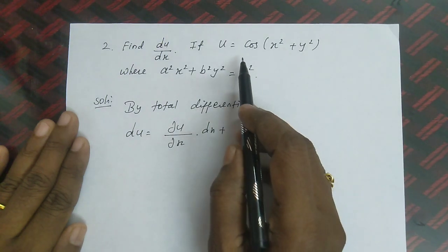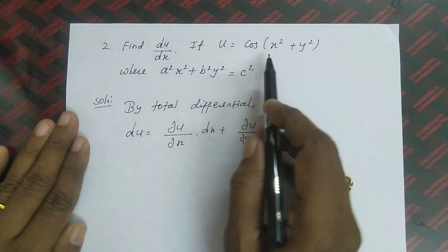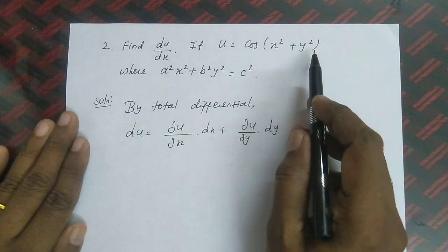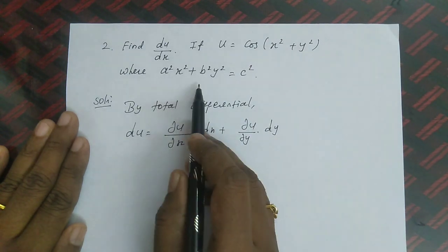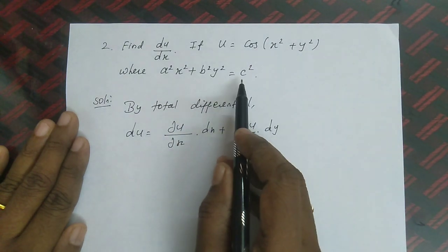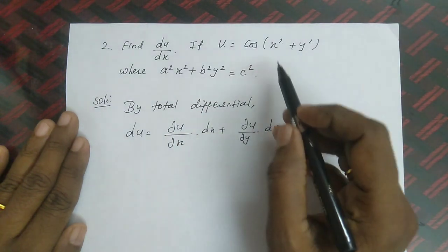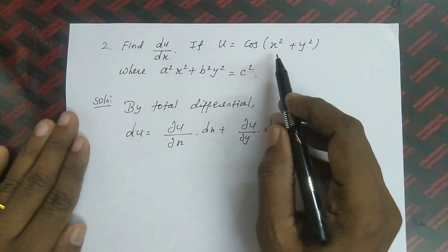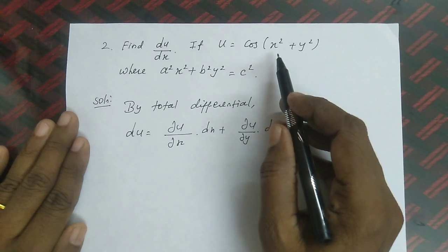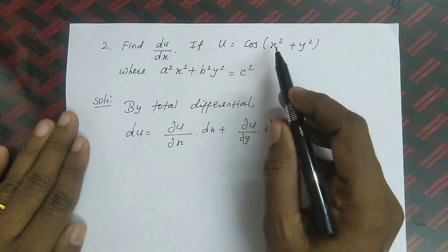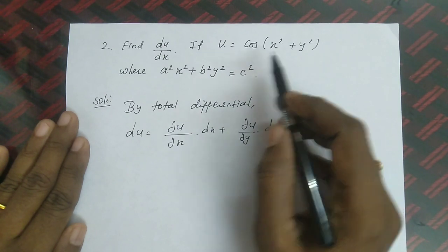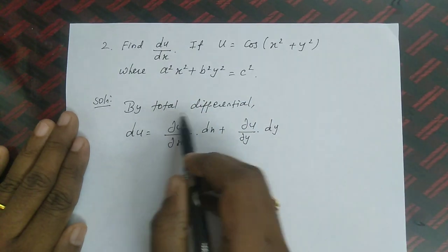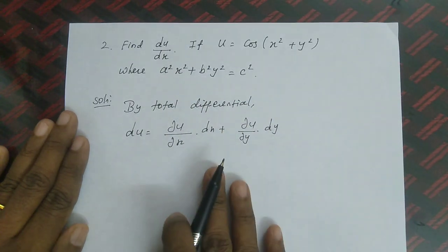Given: u is a function of x and y, and a constraint relation is also given. We are going to apply the total differential coefficient as well as the dy/dx result. Using these two results, we will find du/dx.